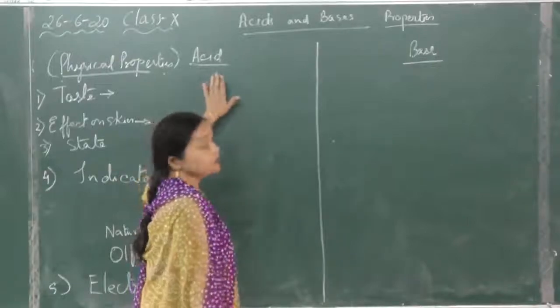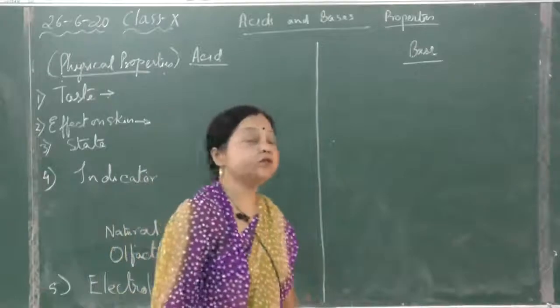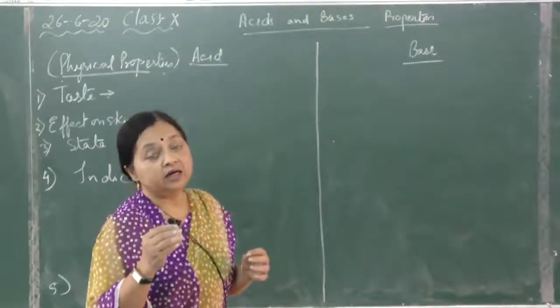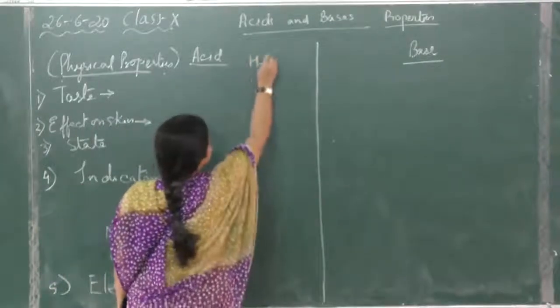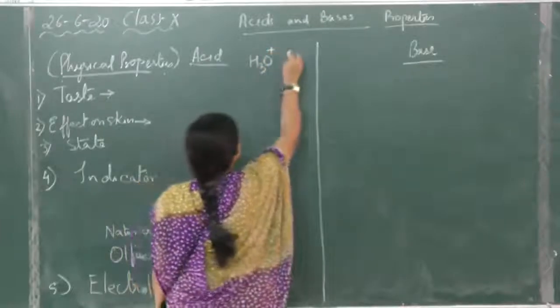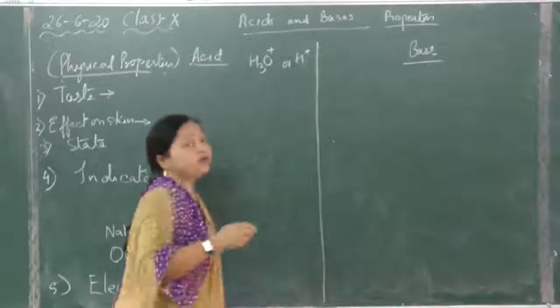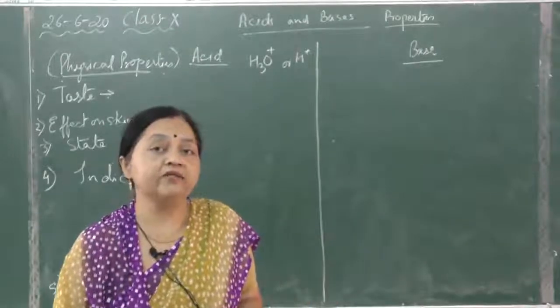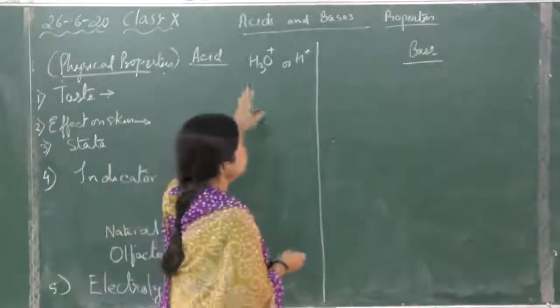Acids, as we already told, are those substances which release hydrogen or hydronium ion when dissolved in water. So all the properties are due to this hydronium ion or hydrogen ion. It releases H3O+ or H+ hydronium or hydrogen ion as the only positive ion when dissolved in water. If it is releasing any other cation along with hydrogen or hydronium, it is not an acid.